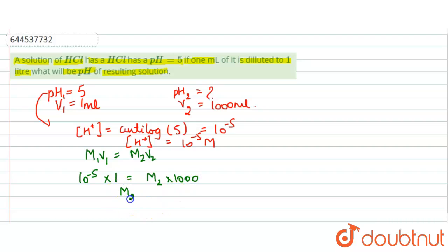So from here we find M2 as 10 raised to power minus 8 molar. So this is the concentration of H positive ions in the resulting solution.